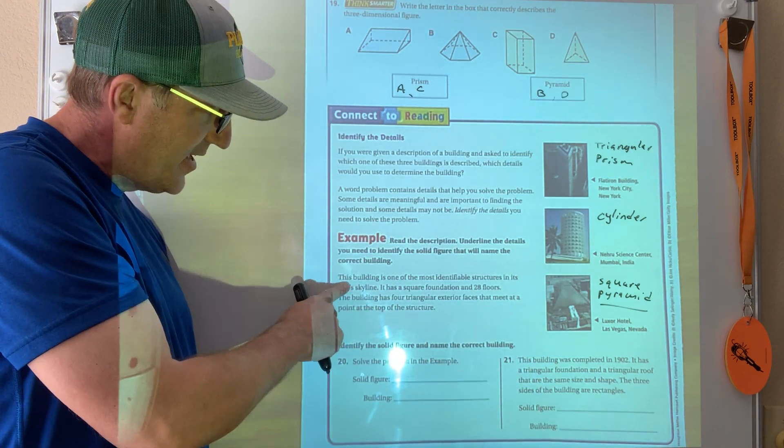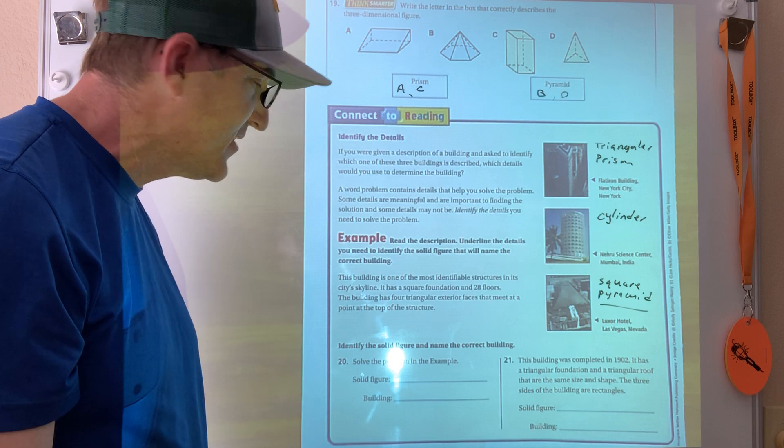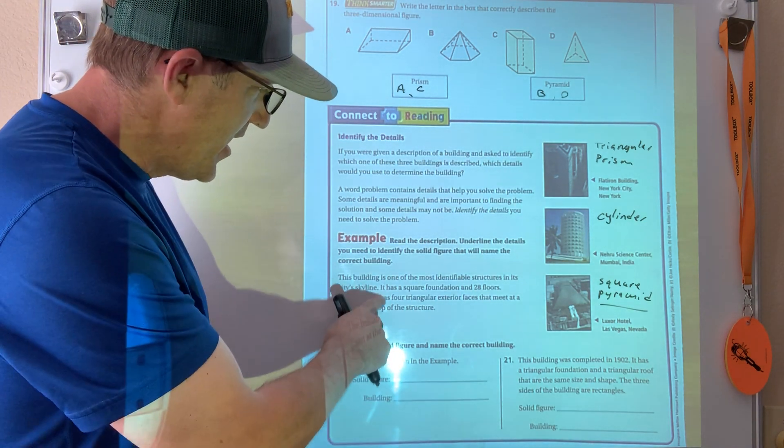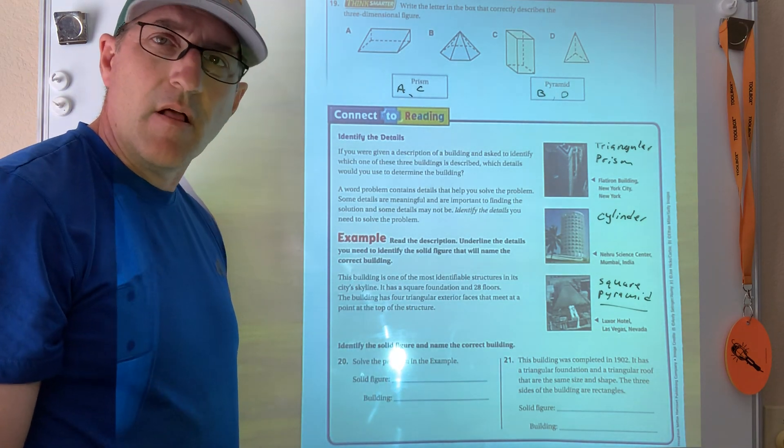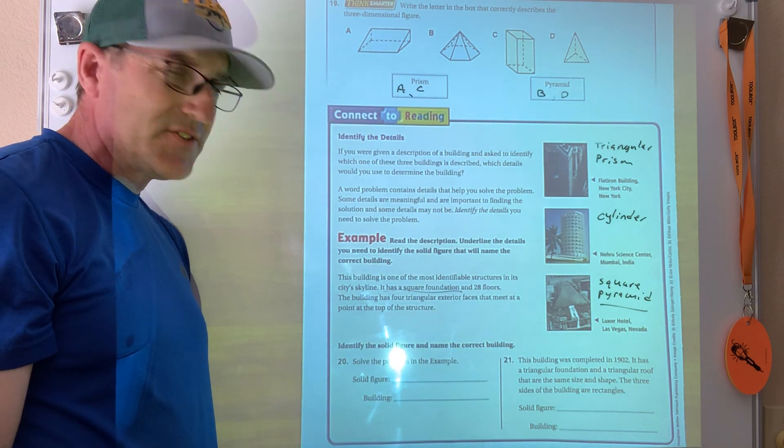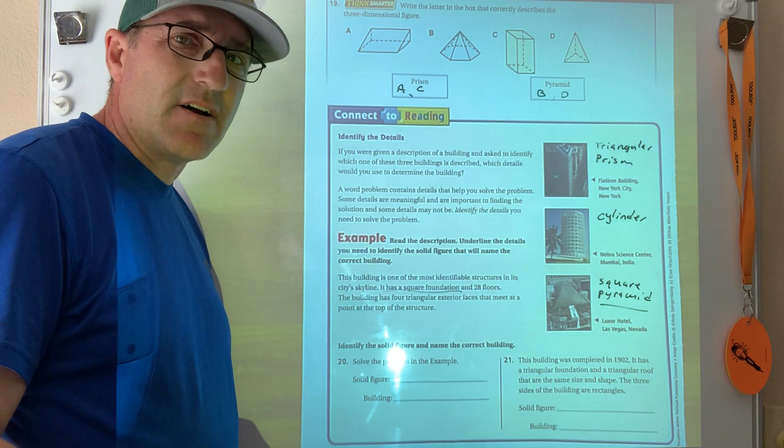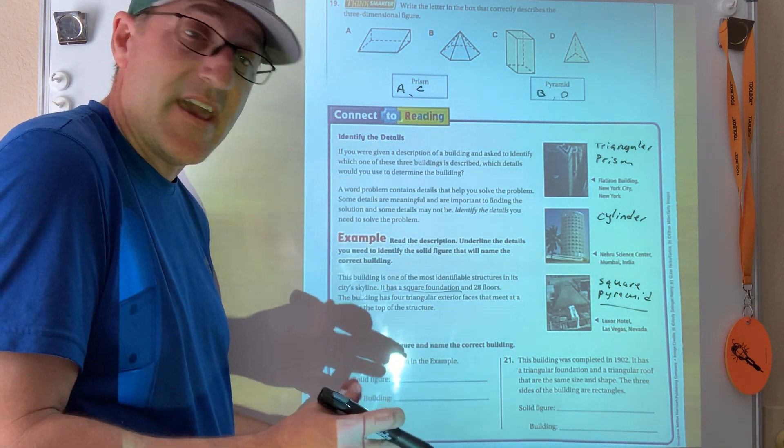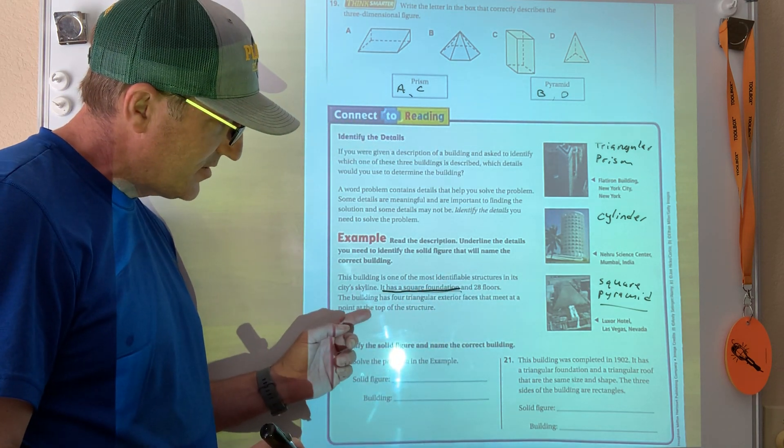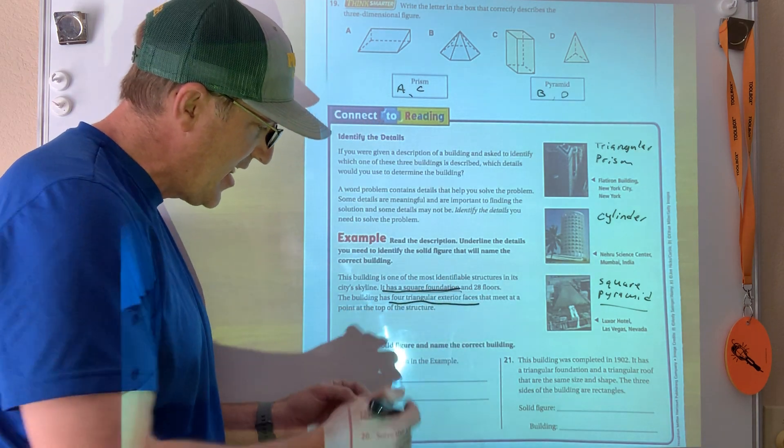So this building is one of the most identifiable structures in its city skyline. Great, don't need that to solve this problem, right? It has a square foundation. That sounds important, a square foundation. And 28 floors. Do I care about the number of floors? I don't, right? I don't care how tall it is. I just need to know the faces of it if I want to identify it. So I've got this square foundation, 28 floors. The building has four triangular exterior faces that meet at a point.